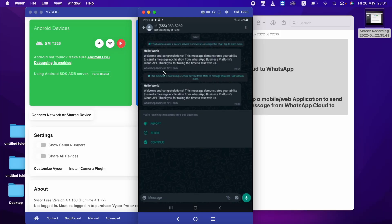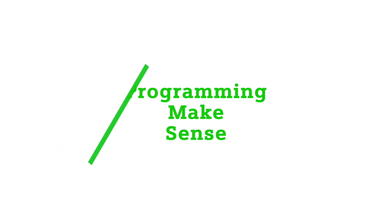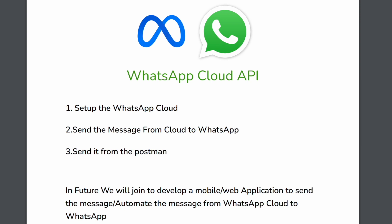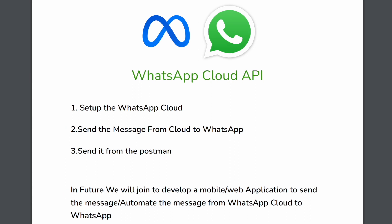In this video we are going to see how to set up the WhatsApp Cloud API. After we set up the WhatsApp Cloud API, we will send a message from the WhatsApp Cloud to a WhatsApp number. After that we will see the WhatsApp Cloud API collection, what the APIs are, how we can use them, and how we can send the request from Postman to WhatsApp.